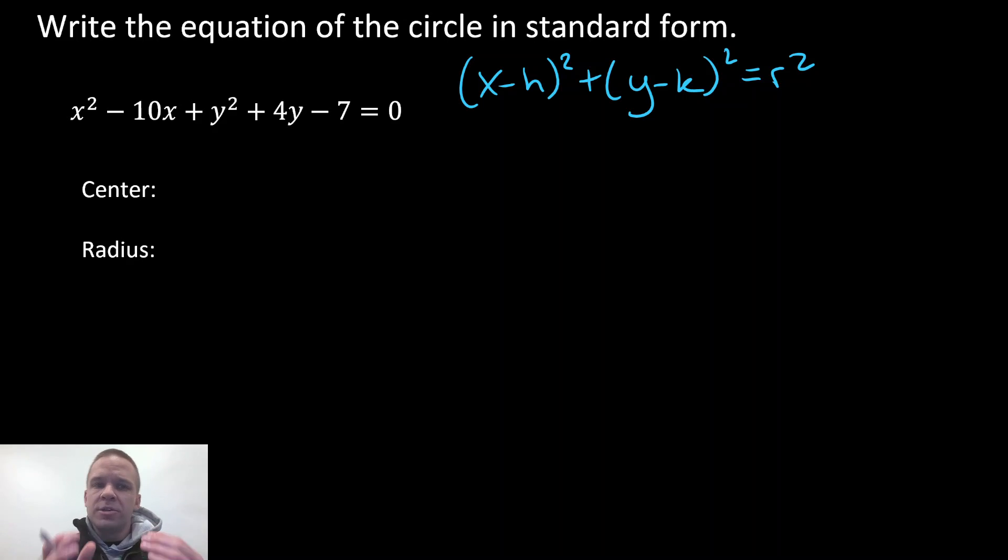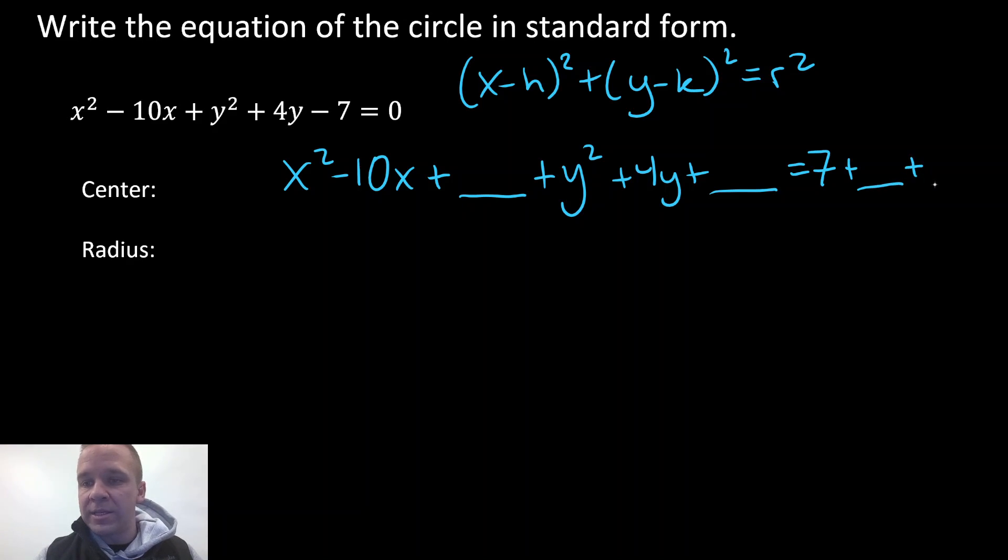All right, so how are we gonna do that? Completing the square. So I need to group my X's together, my Y's together, and get that constant out of the way. So I will have X squared minus 10X plus something to complete the square plus Y squared plus four Y plus something to complete the square equals seven, and then I'm gonna have plus some number that I'm adding to that left side, I gotta add it to the right side as well.